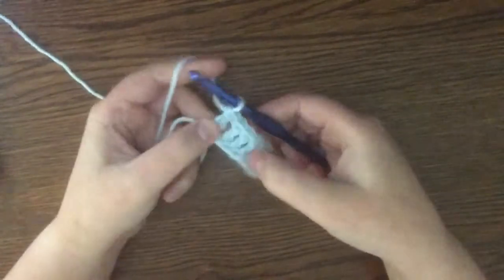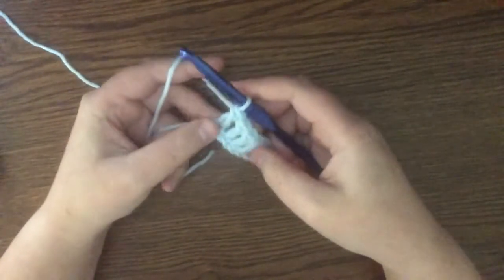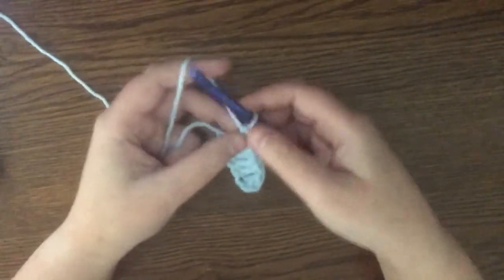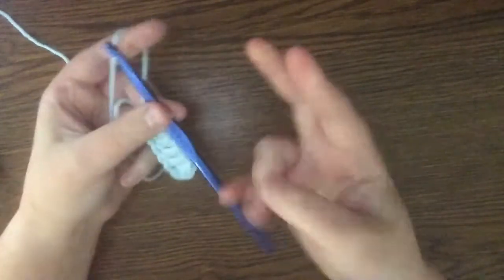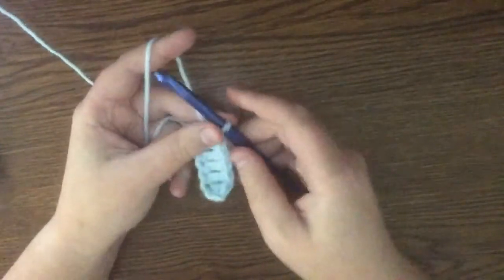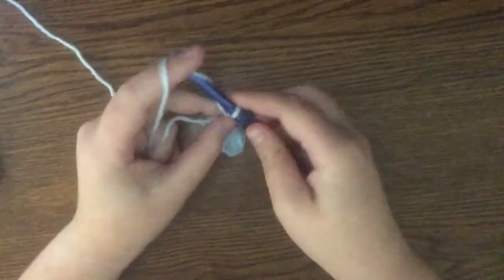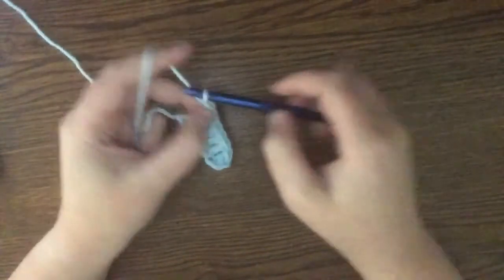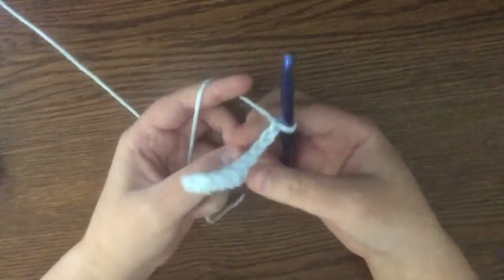If you want to make your work taller, unlike the single crochet, for single crochet you only chain one, for double crochet you need to chain two because it's a taller stitch. So the height of it is two stitches instead of one. So when you get to the end of the row, chain two and turn your work around.